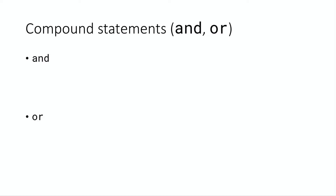More interesting right now are the compound statements, which are 'and' and 'or'. These let us take two separate Boolean conditions and combine them into one. For 'and', if we have condition x and condition y, that means both x and y must be true. In order for the compound condition x AND y to be true, x itself has to be true and y itself has to be true. If either x or y is false, the compound condition is false.